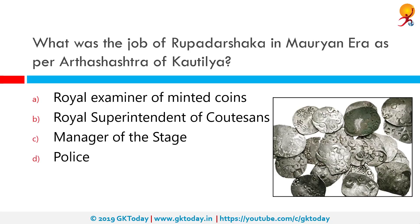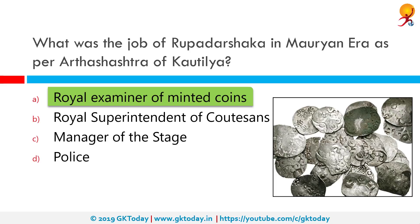What was the job of Rupadarshaka in the Mauryan era as per the Arthashastra of Kautilya? The correct answer is royal examiner of minted coins. The Arthashastra speaks about the role of the Lakshanaddhaksha, or superintendent of the mint, who knew about the symbols, and the Rupadarshaka, who is the examiner of coins.